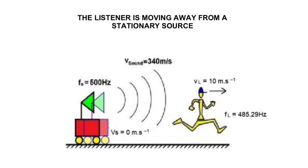Just like in this case, we are given the frequency emitted by the source. With this frequency emitted by the source, we can find the frequency observed by the listener using the Doppler effect equation. Let's go ahead and take a look at that.